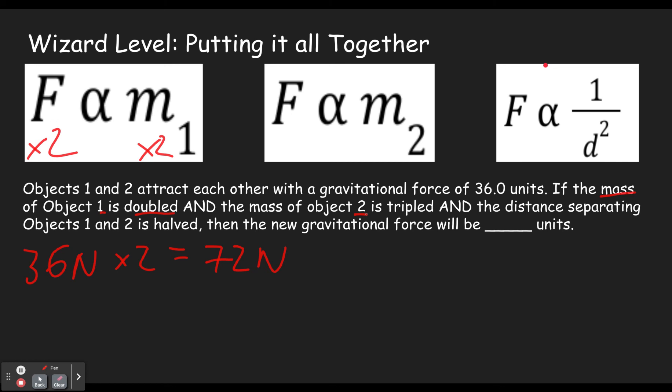And the mass of object one, mass of object two is tripled, so that's times three. Because it's a linear relationship, this is going to be times three. So times three again and that will give us 216 newtons.